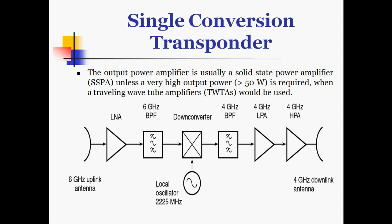The output power amplifier is usually a solid state power amplifier unless very high output power greater than 50 W is required, in which case a travelling wave tube amplifier is used. The local oscillator at 2225 MHz provides the appropriate frequency shift from the 6 GHz uplink to the 4 GHz downlink, and the bandpass filter after the mixer removes unwanted frequencies from down conversion. An attenuator controlled via the uplink command system can be used to set the gain of the transponder.